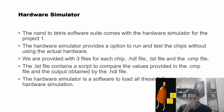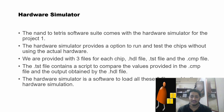Moving on — what is the hardware simulator? In NAND to Tetris there is a hardware simulator which we can use for project 1. It provides an option to run and test chips without using actual hardware. For this, three files are provided for each chip: the .hdl file, the .tst file, and the .cmp (compare) file. The test file contains a script which loads the .hdl file and the .cmp file, and tries to compare the chip's output against the comparison file. The hardware simulator is software where we load the test file and perform hardware simulation.